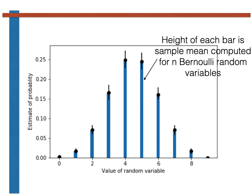For each bar, the p-parameter of the random variable is different, but each bar is an average that is computed by adding n Bernoulli random variables together nonetheless.